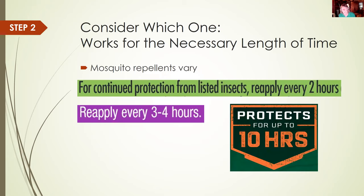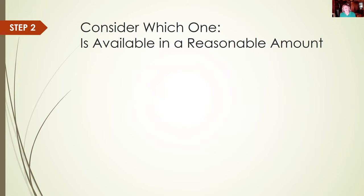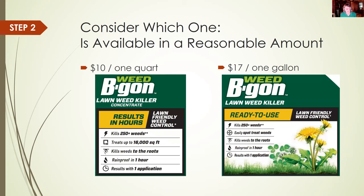You can also consider which one works for the necessary length of time. Mosquito repellents don't all work for the same length — some work two hours, some will work for ten hours, and some tell you to reapply after swimming. Then you want to consider which one is available in a reasonable amount — cheaper is not always better. For example, if you have some dandelions to spot treat, here are two products that are basically identical, except one is a concentrate you take home and dilute, and the other is already diluted — ready to use. The concentrate costs less, but it treats up to 16,000 square feet. If you're spot treating weeds, that's basically 16,000 weeds. Are you going to have that many? Probably not. So you're going to be left with a lot of leftover concentrate that you can't simply put in the trash — you're going to have to find some way of disposing of it.